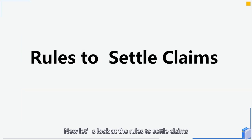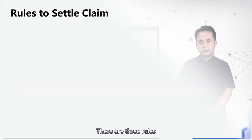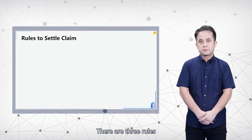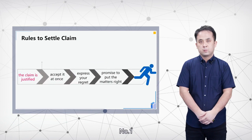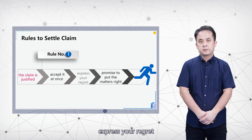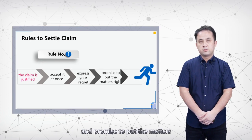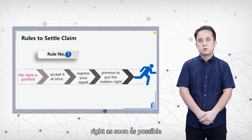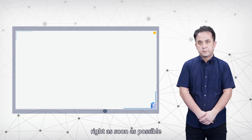Now let's look at the rules of settlement claim. There are three rules. Number one: if the claim is justified, you should accept it at once, express your regrets, and promise to put the matter right as soon as possible.